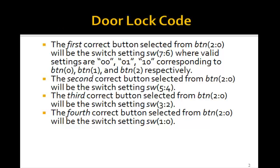Here's how it will work. The first correct button, selected from buttons two through zero (the rightmost three buttons), will be determined by switch settings switch seven to six (the two leftmost switches), where valid settings will be 0-0, 0-1, or 1-0, corresponding to button zero, button one, or button two. So you use the switches to encode the code: if switches are 0-0, button zero is first; if 0-1, button one is first; if 1-0, button two is first.